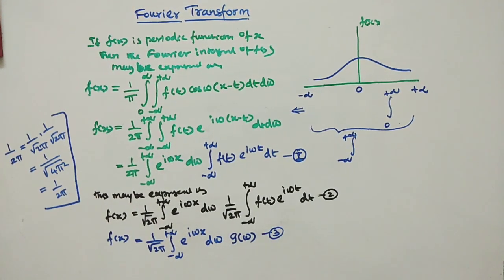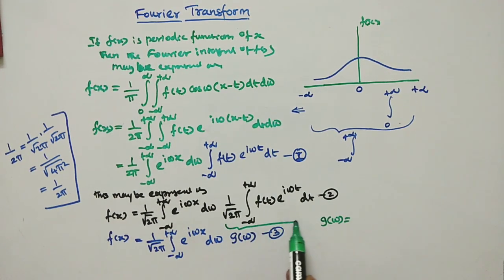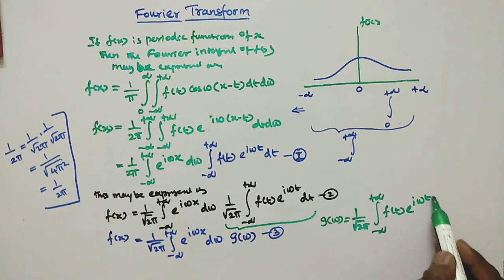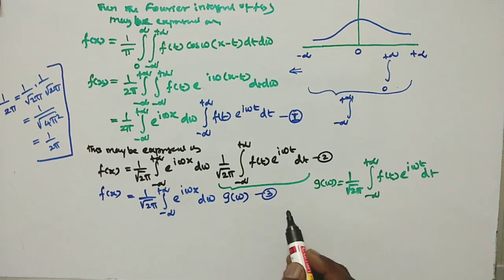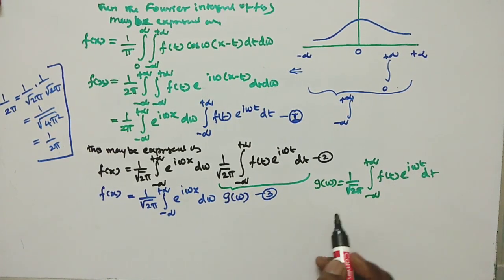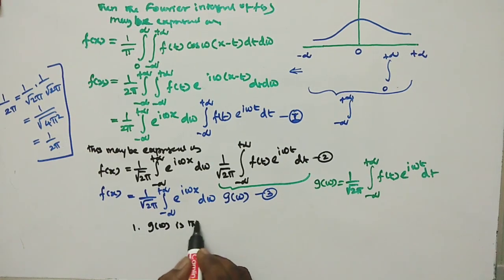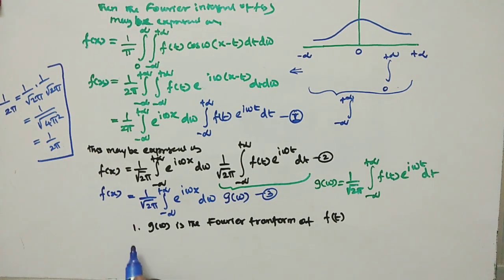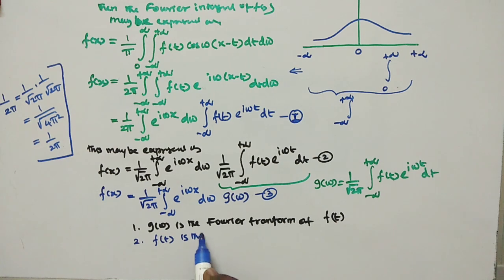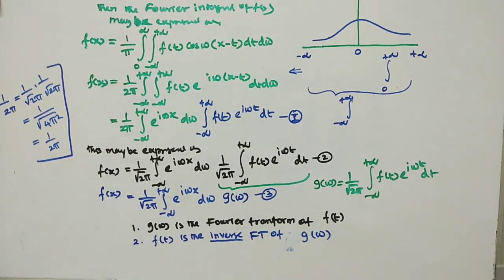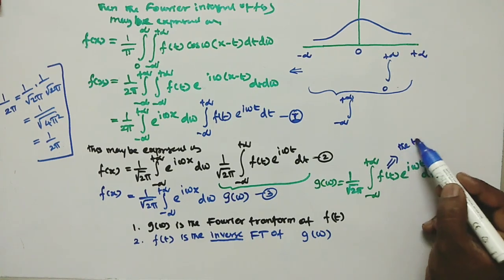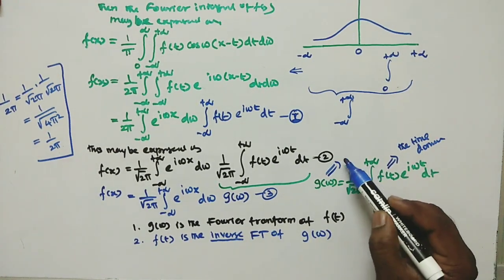We can write this equation by putting g of ω, giving equation 3: f of x equals the integral from minus infinity to plus infinity of e to the power i·ω·x dω times g of ω. Here, g of ω equals 1 by √(2π) times the integral from minus infinity to plus infinity of f of t times e to the power i·ω·t dt. There are two key points: first, g of ω is the Fourier transform of f of t; second, f of t is the inverse Fourier transform of g of ω. Remember the relation between time and frequency: f of t represents the time domain, and g of ω represents the frequency domain.